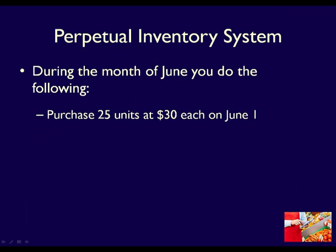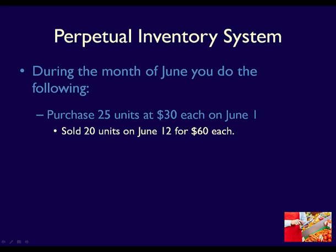Assume we know the same things about the month of June. We purchased 25 units on June 1st, so inventory increases. However, we also know that we sold 20 units on June 12th, so inventory decreases and there are 5 units left on hand for future orders from customers.